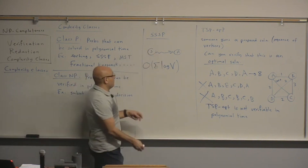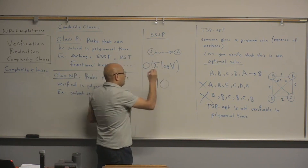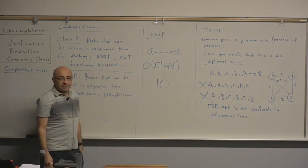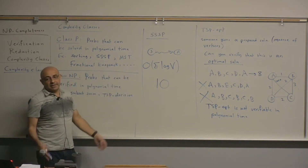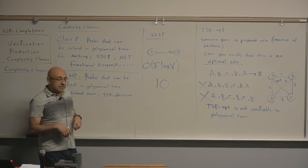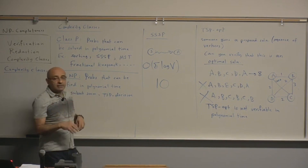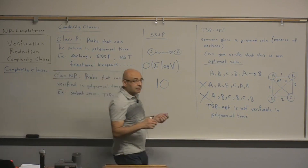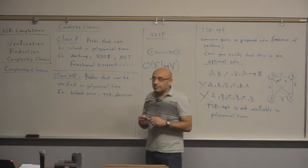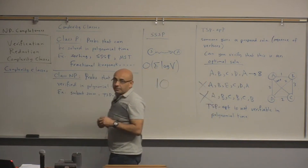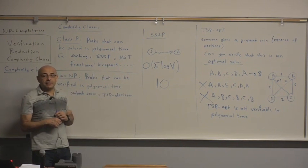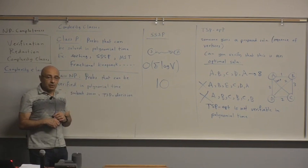You look at the cost of that proposed solution, and you know the optimal because this problem is easy enough to solve in polynomial time. If the optimal solution is 10 and the proposed solution is also 10, then it's indeed optimal. If it's more than 10, then it's not optimal. So if a problem can be solved in polynomial time, it can certainly be verified in polynomial time.